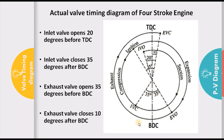The angles shown in this diagram correspond to a low speed SI engine. As engine speed increases, the time available for opening and closing the valves becomes lesser and lesser because the engine cycle is completed in a shorter time. Therefore, we have to increase the values of these angles — the inlet valve must open earlier and close later, and similarly the exhaust valve must open earlier and close later. So the values of these angles increase with engine speed, which is how the valve timing diagram of a low speed and high speed engine differs.